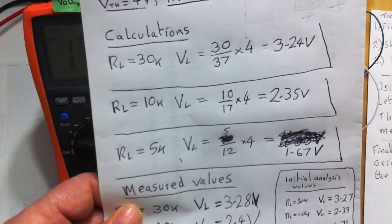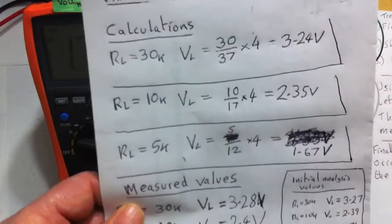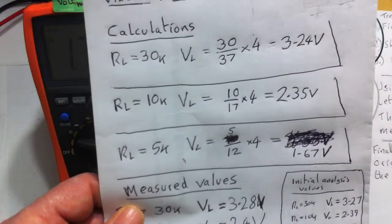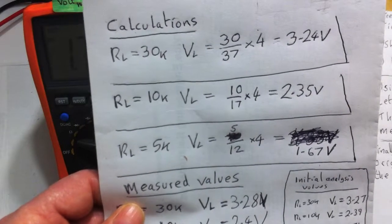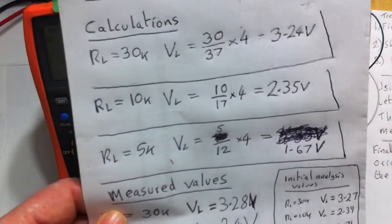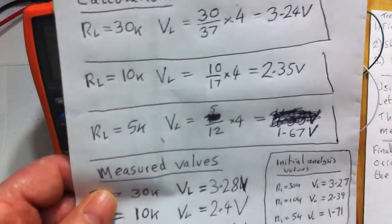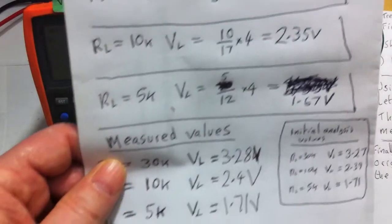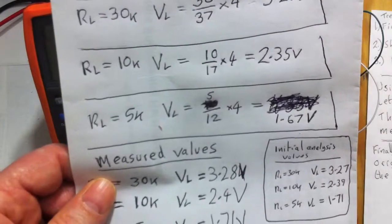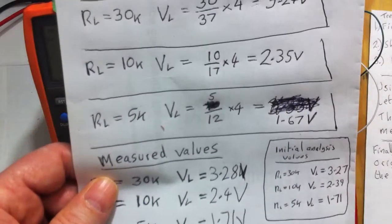There's a slight error obviously. There's some sort of resistance in the avometer. There's probably a slight internal resistance on the actual source voltage power supply. But really that's so close. 1.67 to 1.71, so they're very close.